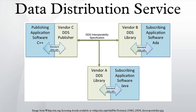Two things made the demos possible: the Data Distribution Service Interoperability specs, sometimes referred to as DDSI or the Real-Time Publish-Subscribe Protocol, and the agreement to use a common model. The Real-Time Publish-Subscribe Wire Protocol DDS Interoperability Wire Protocol specification defines an interoperability protocol, ensuring that information published on a topic using one vendor's DDS implementation is consumable by subscribers using the same or different vendor's DDS implementations.